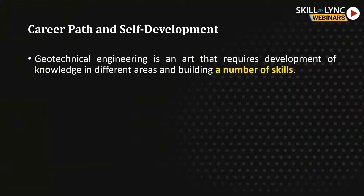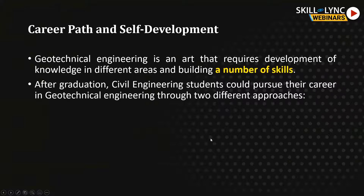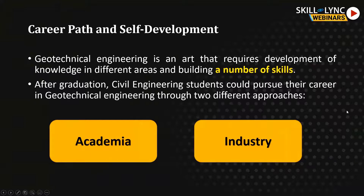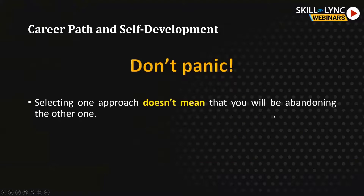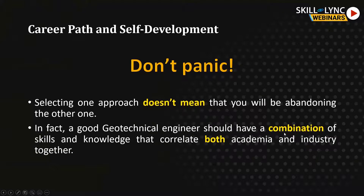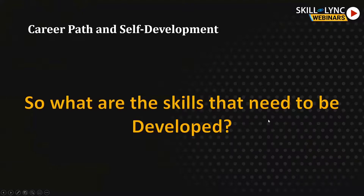For geotechnical engineering, it should be known that it is an art that requires development of knowledge in different areas and building of a number of skills. After graduation, civil engineering students could pursue a career in geotechnical engineering through two different approaches: academia and industry. Some people think that if they go to academia they cannot go to industry and vice versa — don't panic, because selecting one approach does not mean abandoning the other. A good geotechnical engineer should have a combination of skills and knowledge that correlates both academia and industry.